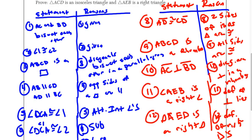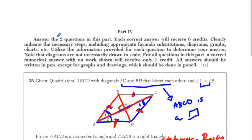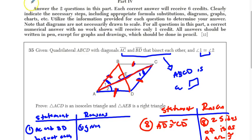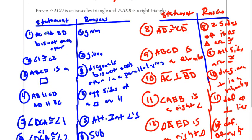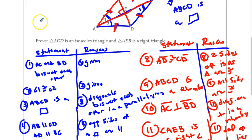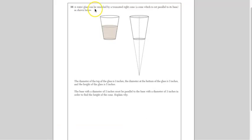That was a tough proof! Well, that'll get you six points. Remember, if you put some correct statements, you will get points on this. This is the full perfect proof that you need to write.